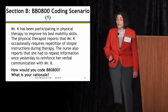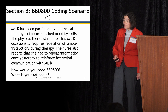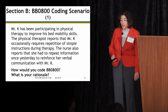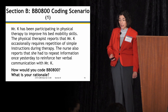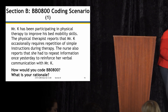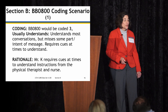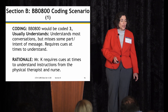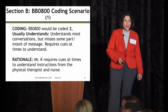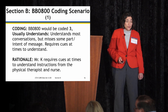For BB0800: Mr. K has been participating in physical therapy to improve his bed mobility skills. The physical therapist reports that Mr. K occasionally requires repetition of simple instructions during therapy. The nurse also reports she had to repeat information once yesterday to reinforce her verbal communication with Mr. K. The answer is code 3 — usually understands — because Mr. K understands most conversation but requires cues at times from both the physical therapist and the nurse.